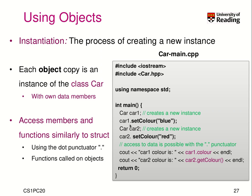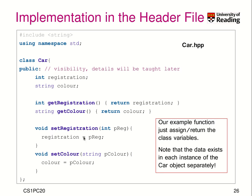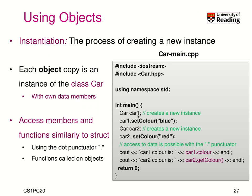To access members and functions, it's the same as accessing struct members in C. We can say car1.setColor("blue"), which calls the setColor method and sets the color to blue — but only for the instance car1. When we have car2 and say setColor("red"), we have another car whose color is red. Now we could print the values.